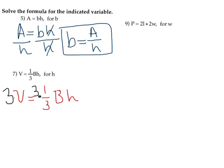Now that I've done that, watch what happens. On the right-hand side, I have three times one over three. Well, the threes line out, leaving me with just BH. And on the left, I have three times V, which is just 3V.